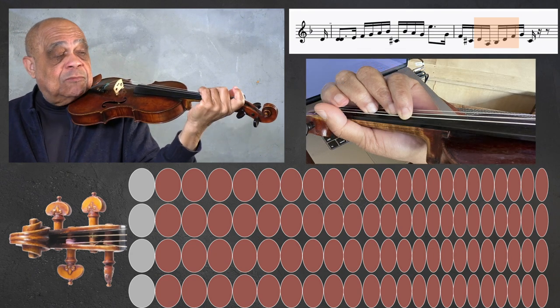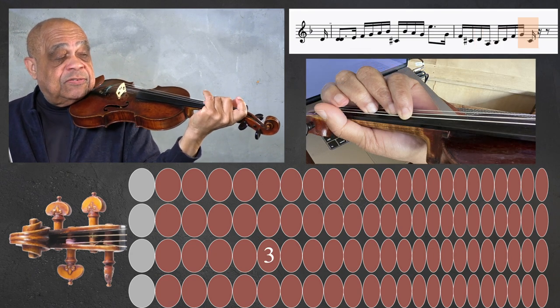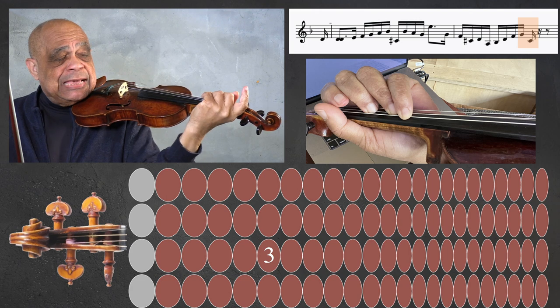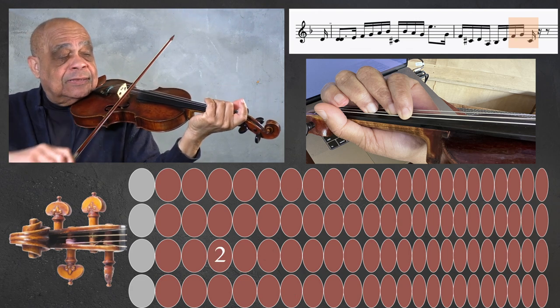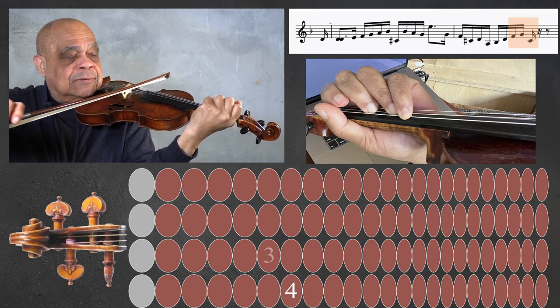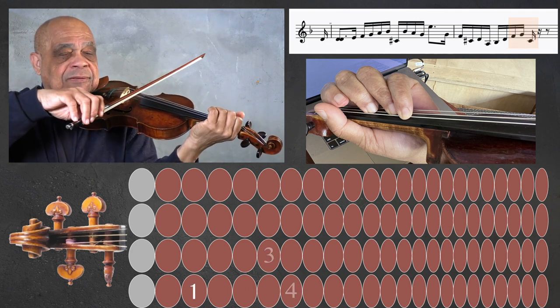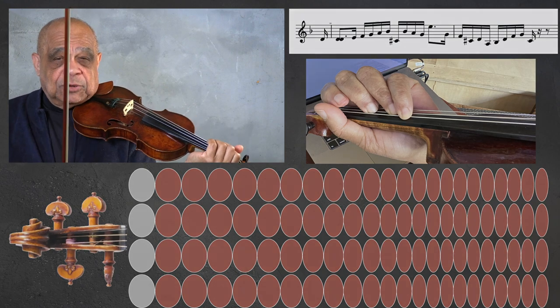And now when we're playing our third finger G, as quickly as we can, get the fourth finger over before we play it, and we're good.